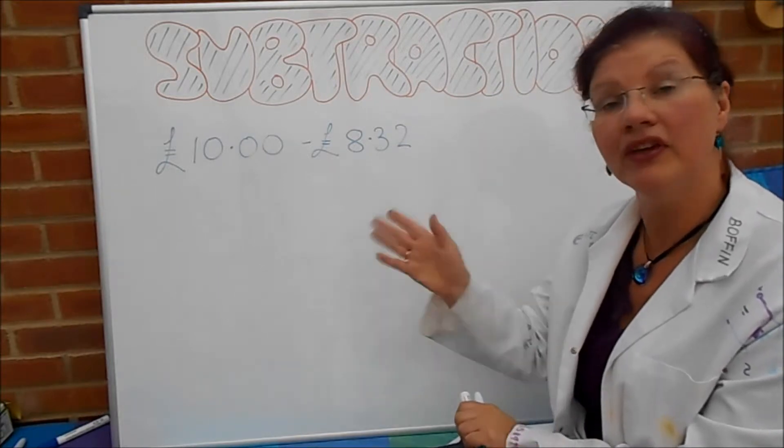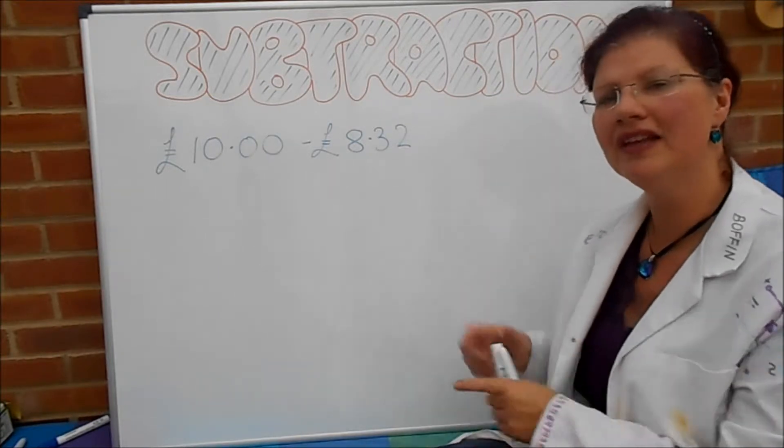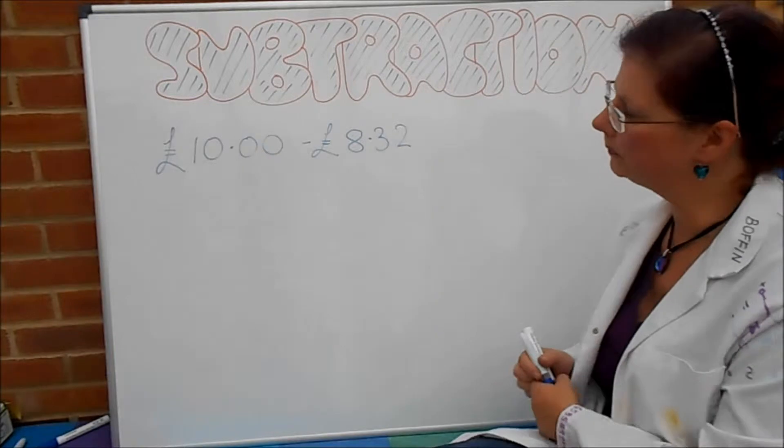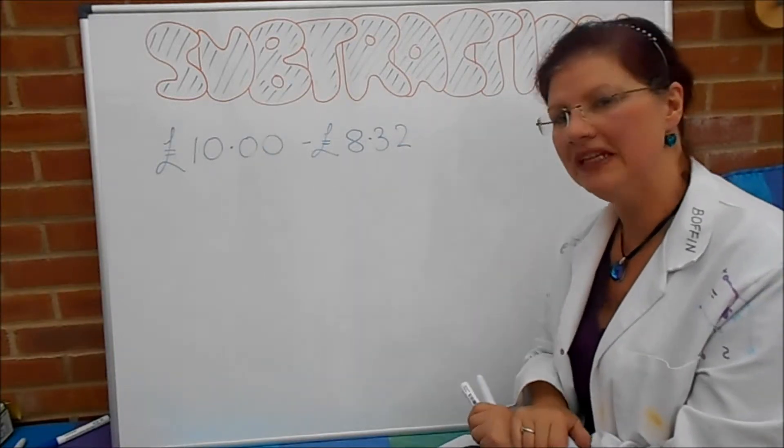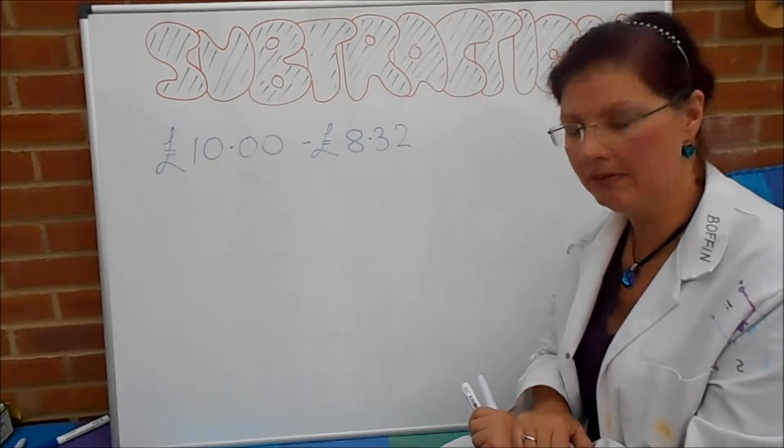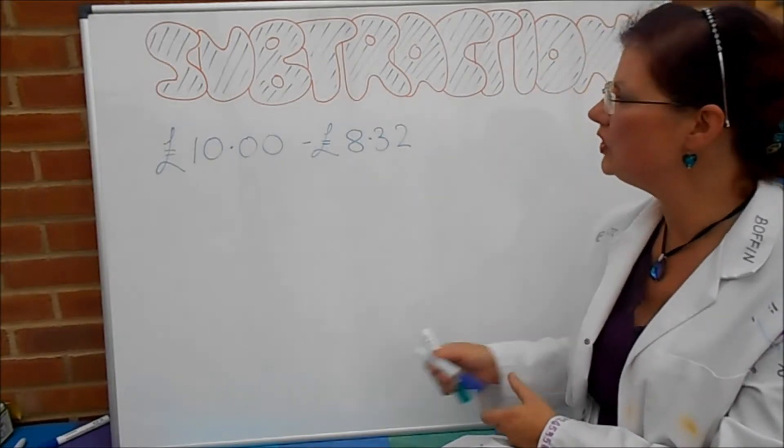Now we could do it by the column method and I'm actually going to do that in a minute, but here's how you do it by the shopkeeper method. What we're going to do is start with the £8.32 and add on bits and bobs until we get up to £10. So, well what should we add on first?